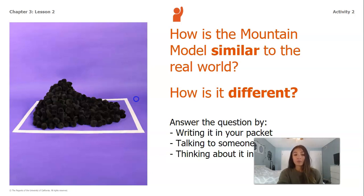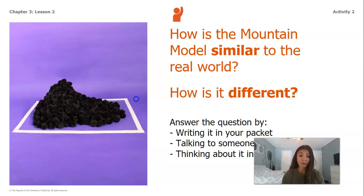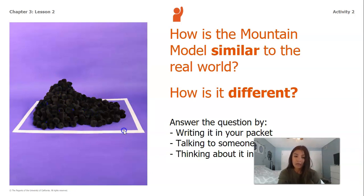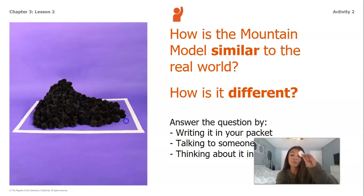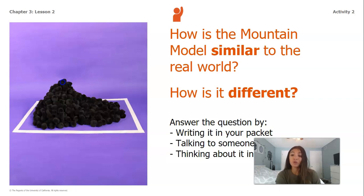Some things that are similar between our model and a real mountain are that the shapes are pretty similar — just like in this picture, you're going to have a higher peak and then a more elevated area going down to a low land area. Another similarity is the idea of each pom-pom representing a small piece of rock, because taking one pom-pom off is not going to cause a huge change you'd notice — and that's the same with a real mountain, where a tiny piece of rock coming off isn't something you'd necessarily notice.